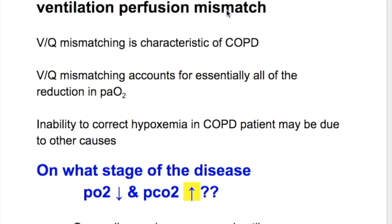Ventilation-perfusion mismatch in emphysema: what is ventilation-perfusion? If ventilation is reduced in a part of the lung, the blood supply to that part is reduced and the blood vessels are constricted. Ventilation-perfusion mismatching is characteristic of COPD and accounts for essentially all of the reduction in arterial oxygen.